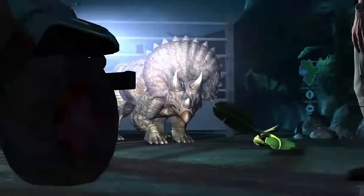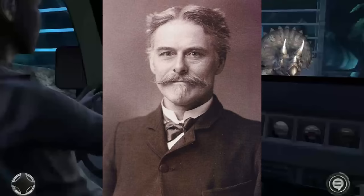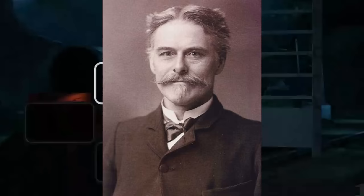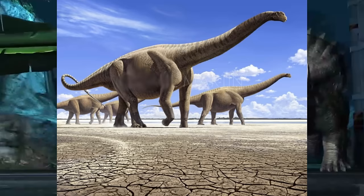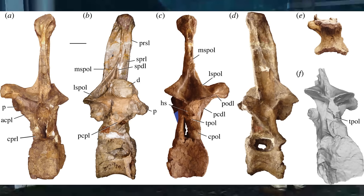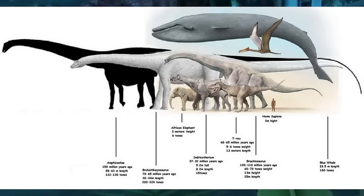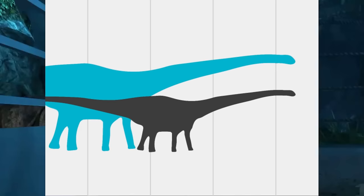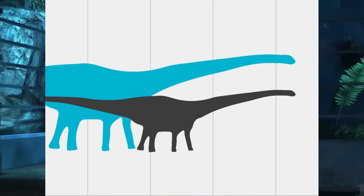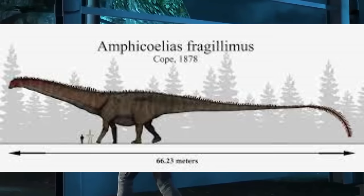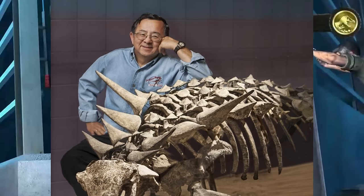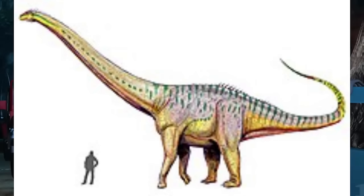The story of Amphicoelias fragillimus is a pretty controversial chapter in paleontology. Edward Drinker Cope described this dinosaur species based on the discovery of a single enormous vertebra that stood over a meter tall, suggesting the existence of an exceptionally large sauropod, potentially the biggest one ever known. However, the fossil has since been lost or misplaced, causing skepticism and debate about the dinosaur's existence and size. Many researchers question whether the species even exists, or if Cope may have exaggerated its size. The controversy mostly comes from the lack of fossil evidence beyond Cope's initial description and a single drawing, though Kenneth Carpenter has advocated for the accuracy of Cope's original dimensions.